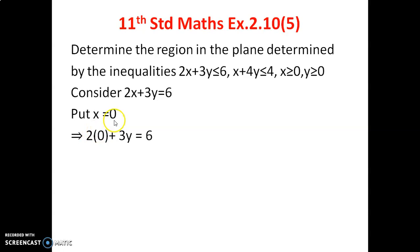I am putting x equals 0. 2(0) plus 3y equals 6, so 3y equals 6, y equals 6 by 3, y equals 2. Therefore, my first point is A(0,2).